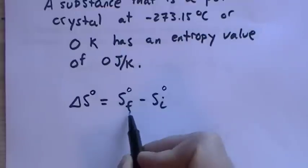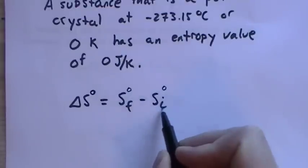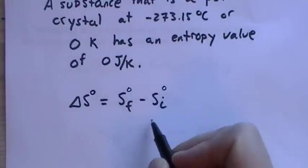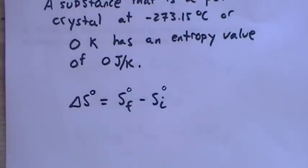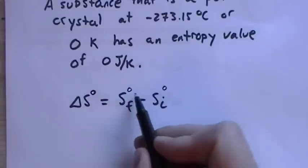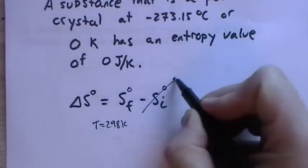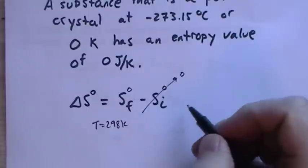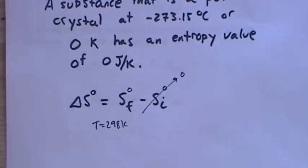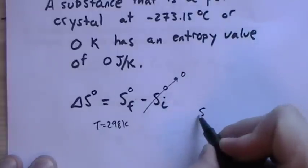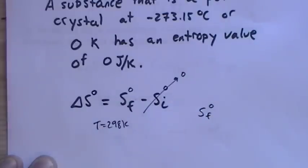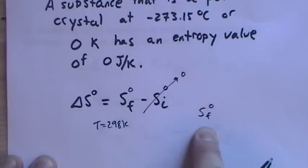What that means is that when we find the change in entropy, going from the initial temperature (zero Kelvin) up to the final temperature, since the degree sign here means 298 Kelvin, the starting entropy is always zero. In your tables you'll always see delta G and delta H but just S — not delta S.